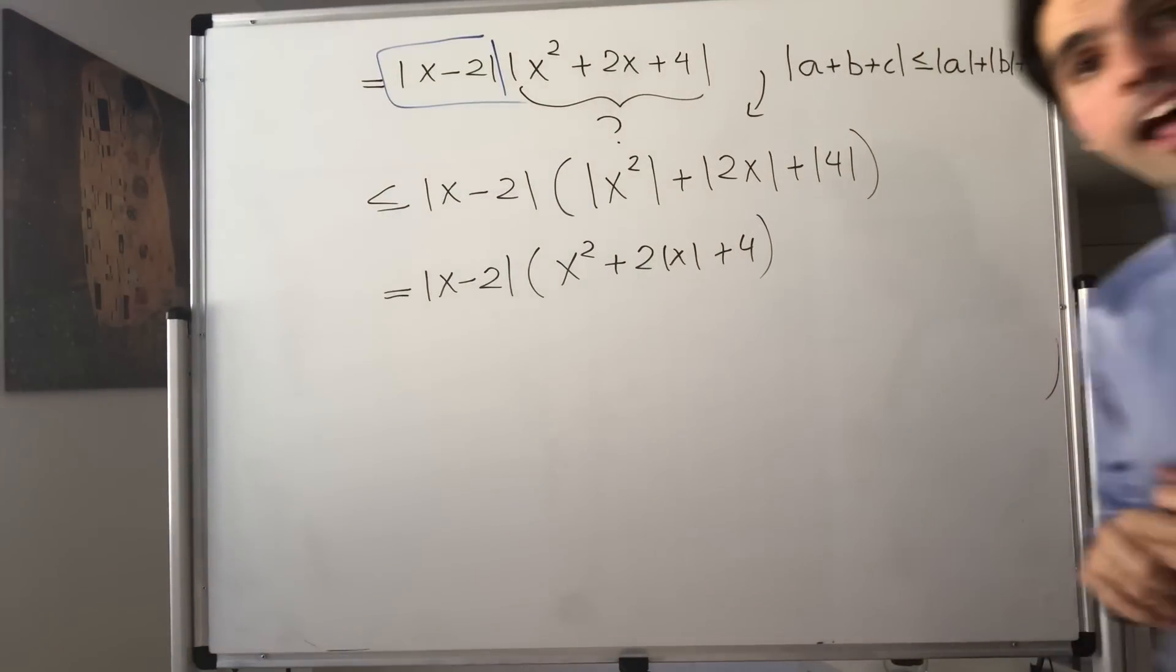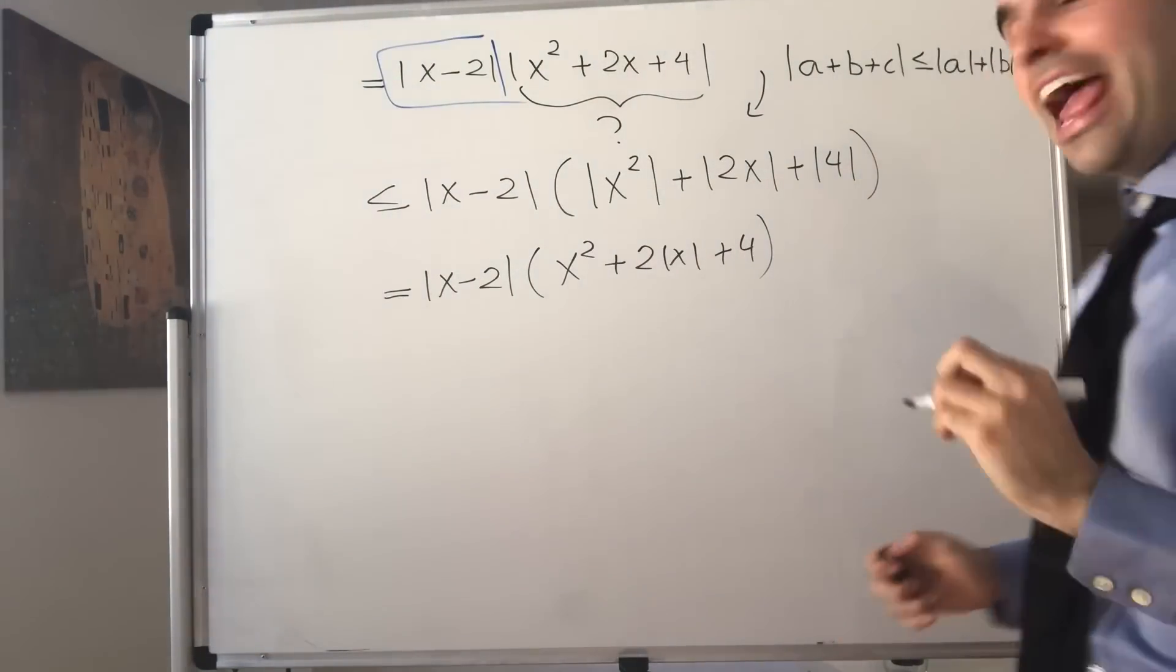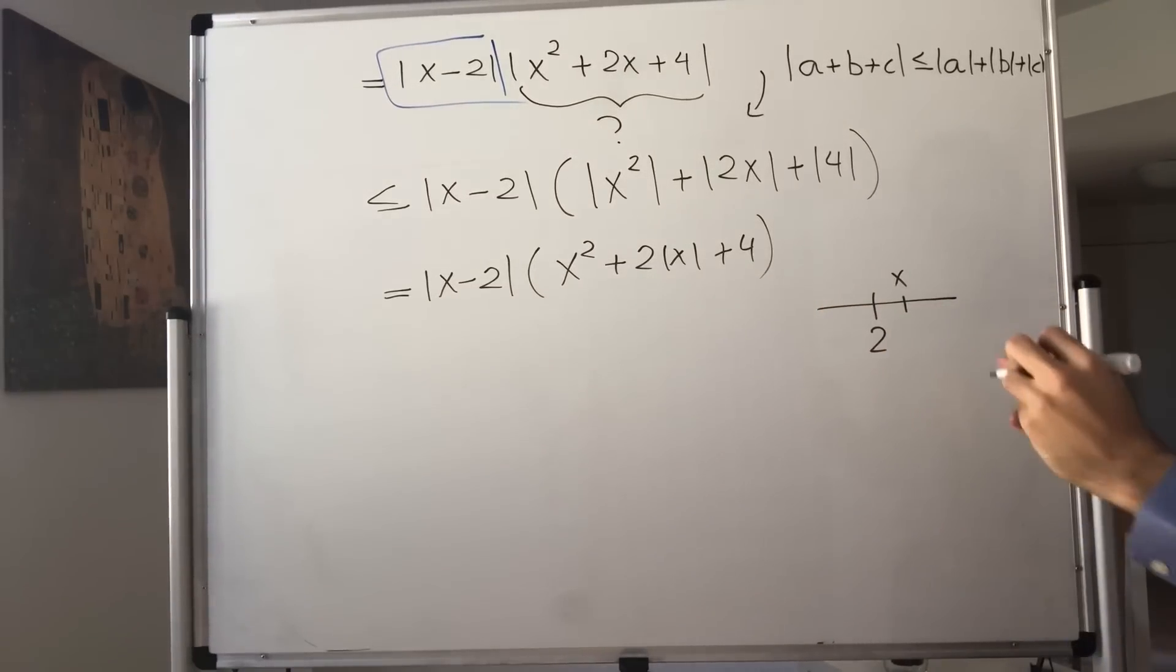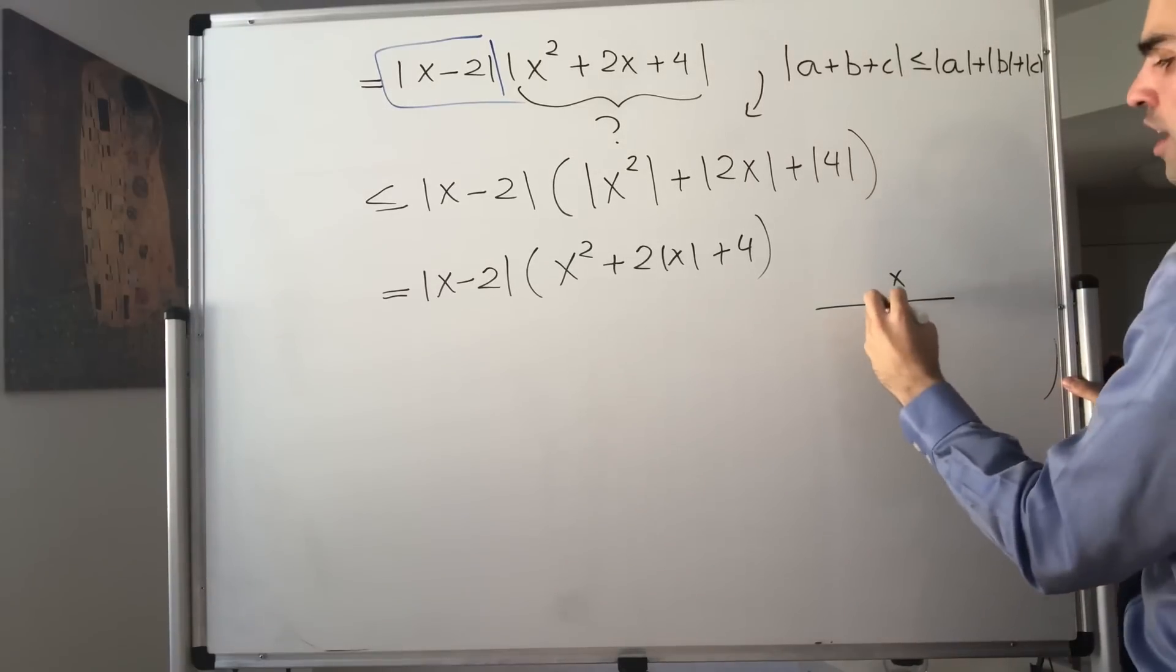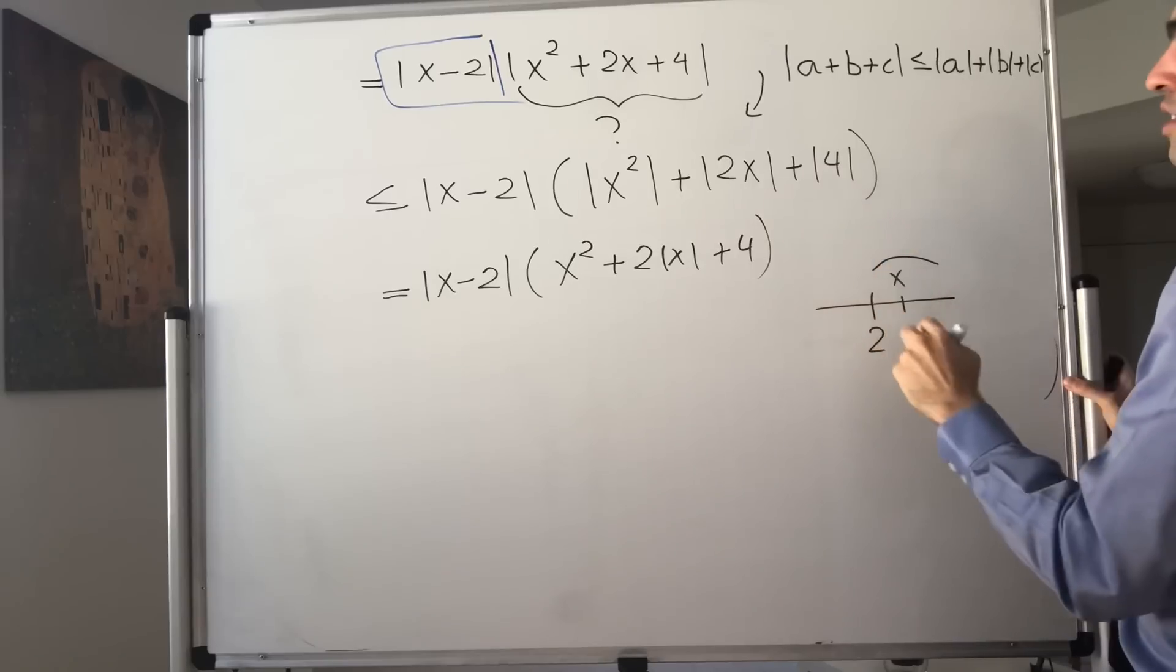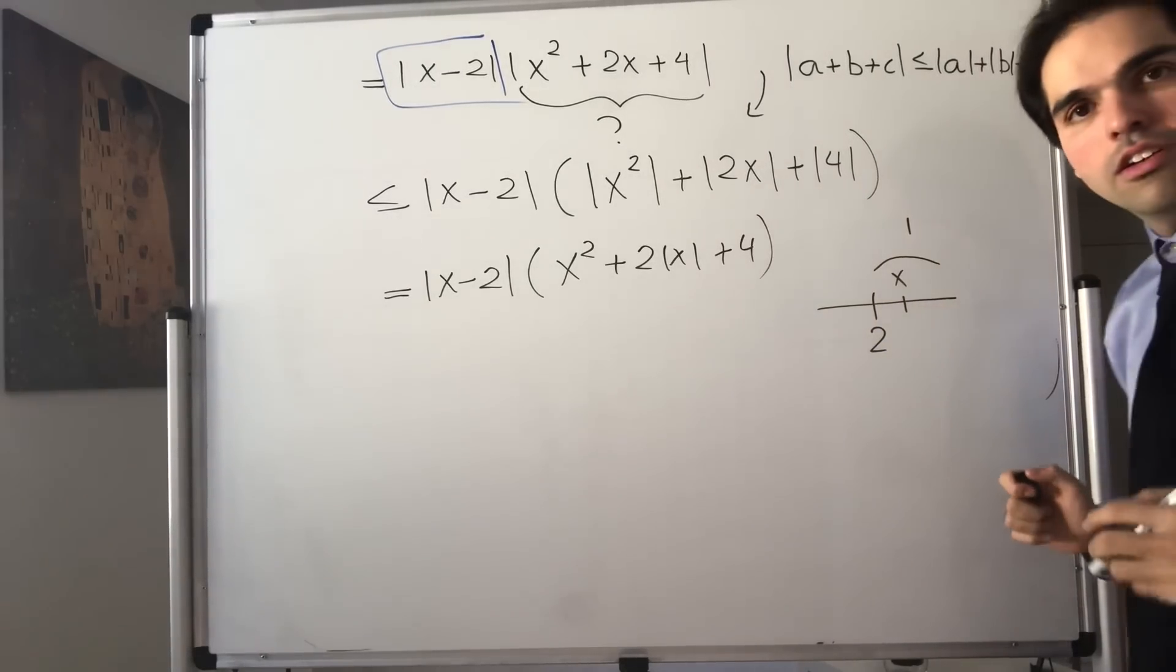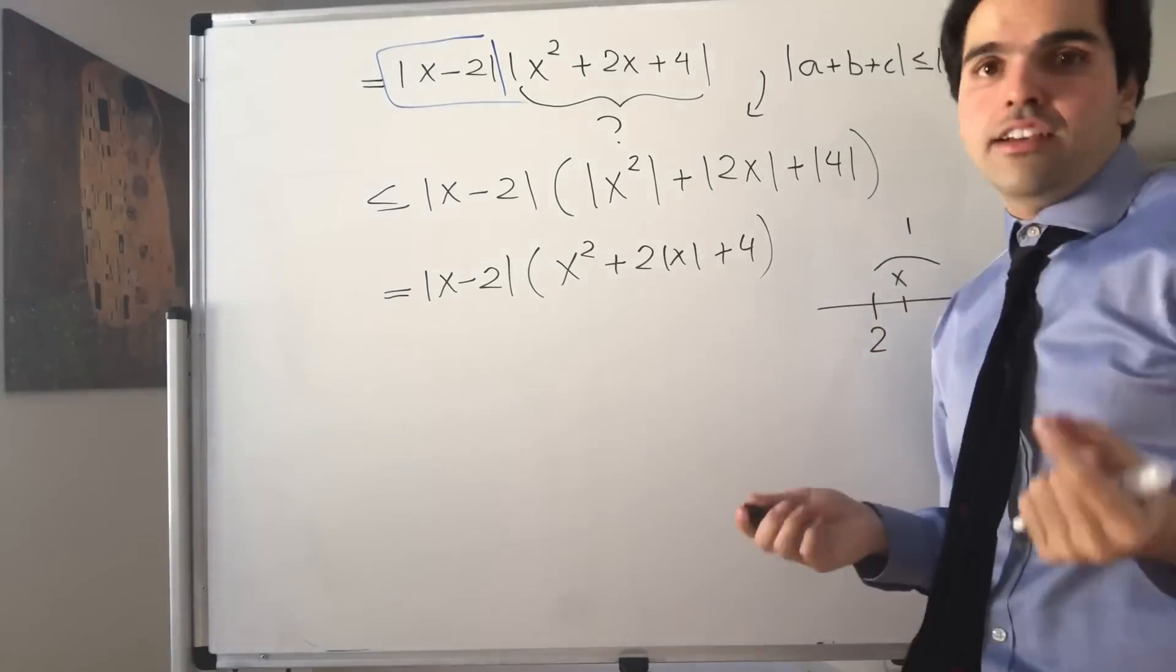On the other hand, remember that x is actually very close to 2. X is very close to 2. In particular, it's safe to assume that the distance between x and 2 is less than 1, because we just want x to be very close.